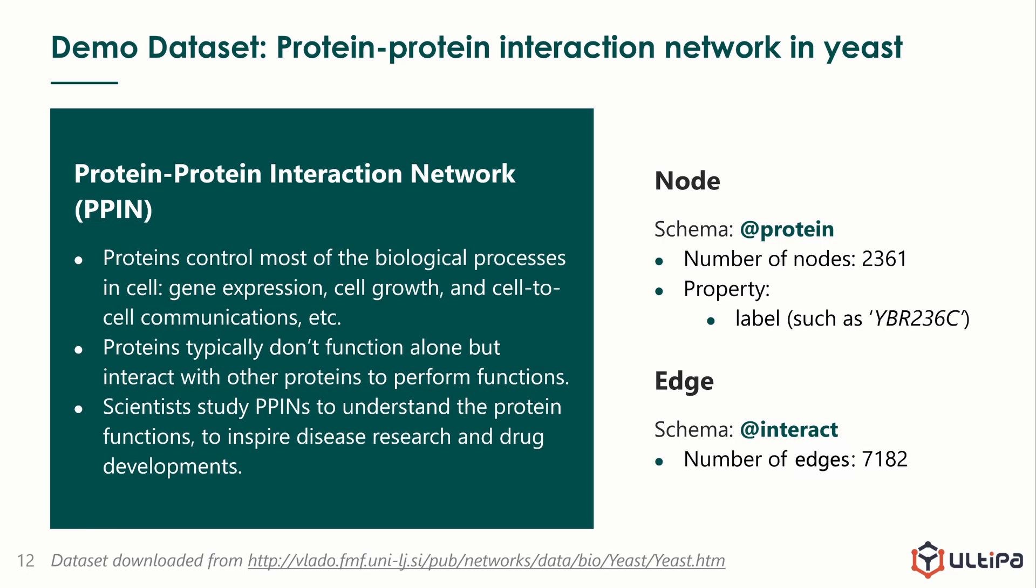The dataset we use for demo contains 2361 proteins. Each protein has a label. Two proteins are connected by edge if there is an interaction between them. There are 7182 interactions. We will analyze betweenness of the proteins in the network. It was proposed by some scientists that high betweenness proteins may act as important or essential roles as they have the most influence over the information transfer between others.